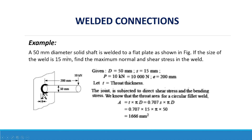Example: A 50mm diameter solid shaft is welded to a plate as shown in the figure. If the size of the weld is 15mm, find the maximum normal and shear stress in the weld. The applied load is 10kN, the distance from the load to the intersection is 200mm, the shaft diameter D = 50mm, and the weld size S = 15mm.